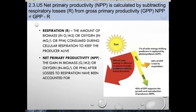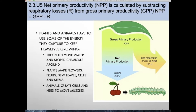Estimates of respiration are gained from the amount of carbon dioxide produced, obtained by measuring the concentration of the gas in the atmosphere. Net primary productivity is not very efficient. If you assume a plant receives 100 units of solar energy: 50 will be unused because it is in the wrong wavelength, 5 will pass through the leaf, 5 will be reflected, and 40 units go into the leaf. Of those, only 30 units will be used for photosynthesis — the remaining 10 are used for biomass or lost in respiration. Plants and animals have to use some of the energy they capture to keep themselves growing, moving water, and storing chemicals. Plants make flowers, fruit, new leaves, cells, and stems; animals create cells and move muscles.